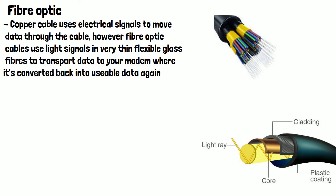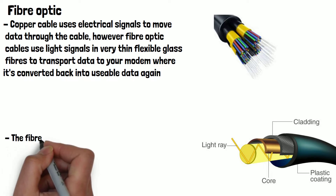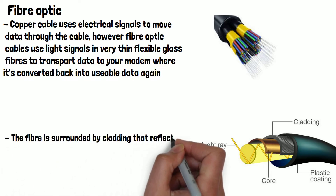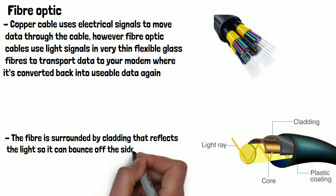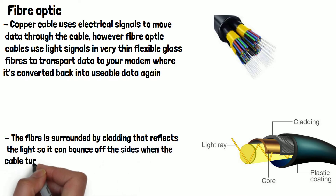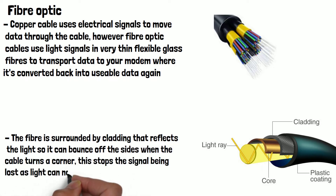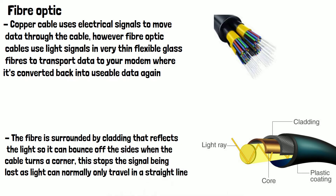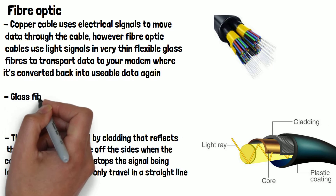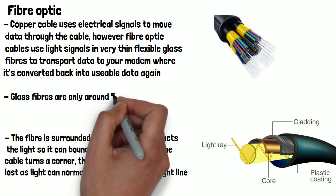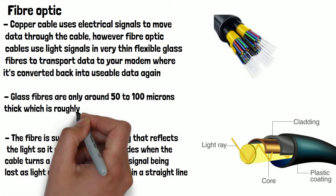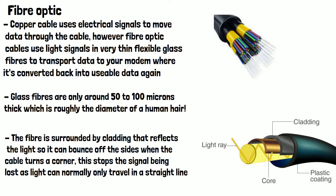This is an example of how a fiber optic cable works. The fiber is surrounded by cladding that reflects the light so it can bounce off the sides when the cable turns a corner. This stops the signal being lost, as light can normally only travel in a straight line. The actual glass fibers themselves are only around 50 to 100 microns thick, which is roughly the diameter of a human hair.